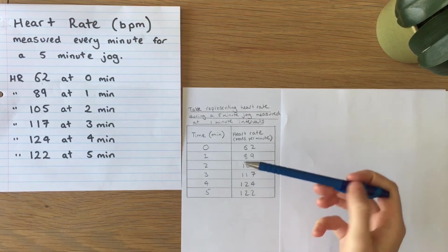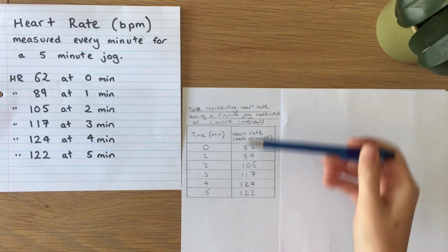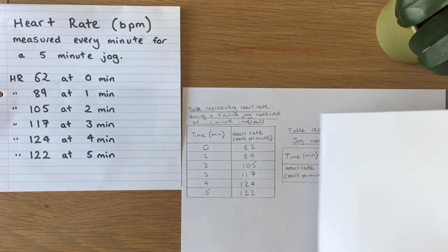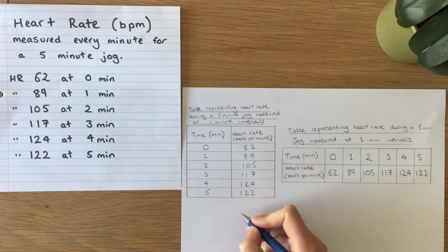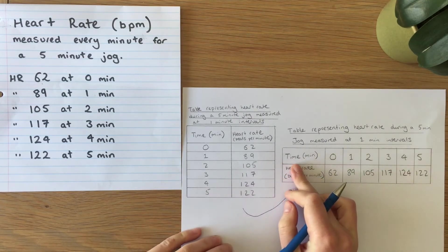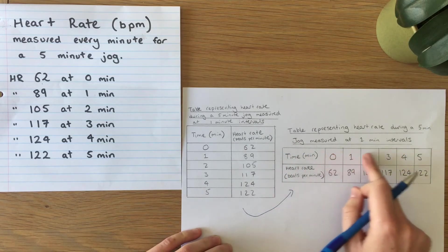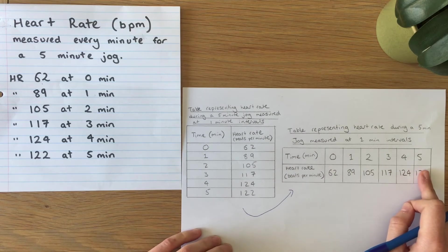So far we've been looking at examples where the independent variable is in the left column and the dependent is in the right column. However in some exams or textbooks you might well see a different configuration of a table whereby the independent variable is in fact in the top row with the data following along on the right and the dependent variable is in the bottom row with the data following along on the right.